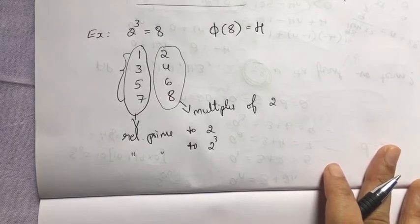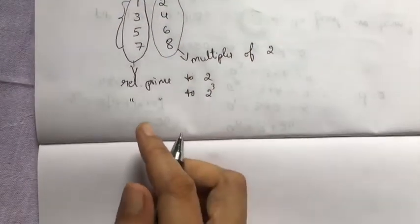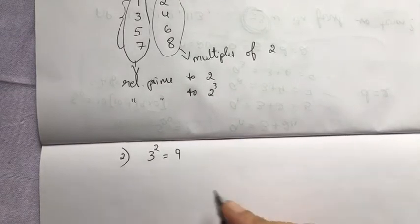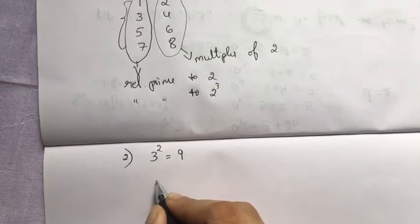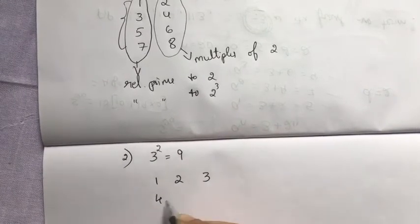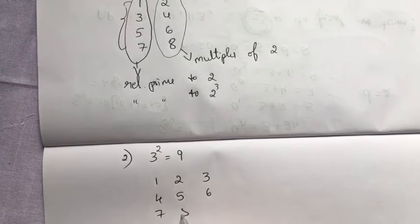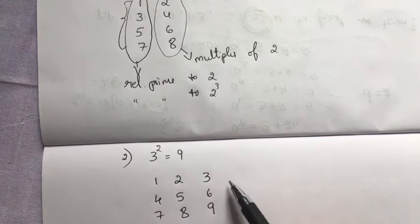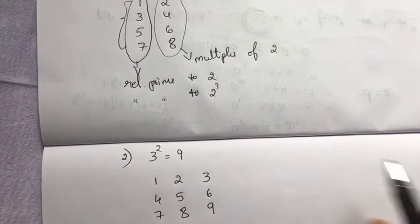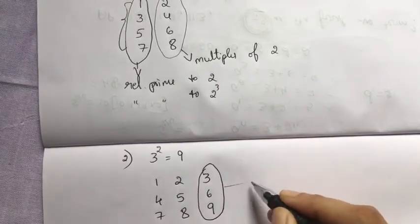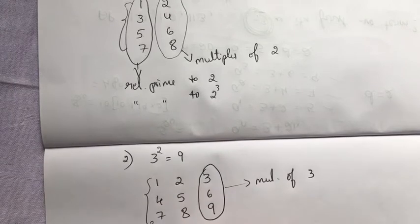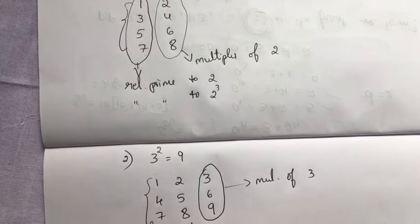Second example: say 3² = 9. List out numbers 1, 2, 3, 4, 5, 6, 7, 8, 9. Since p is 3 here, take p columns — that is 3 columns. Look at the third column: those are multiples of 3, and the remaining numbers are relatively prime to 3, in fact relatively prime to 3².